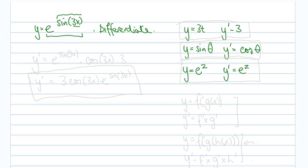So we've got three functions here, but they're combined. So it's 3x, take the sine of that, and then e to the power of that.